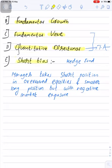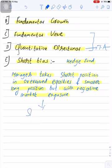The last subcategory is short bias. Here, the hedge fund manager takes short positions in overvalued equities and smaller long positions, but with negative market exposure. This basically means short positions tend to be greater than long positions, as indicated by the term 'smaller long position.'